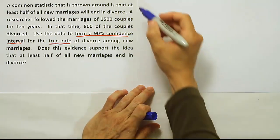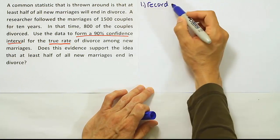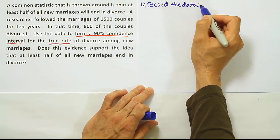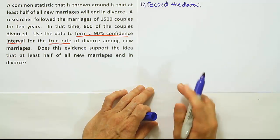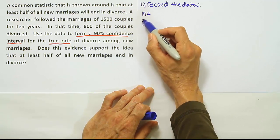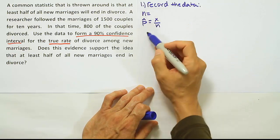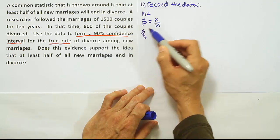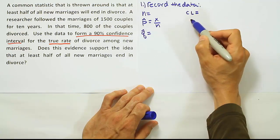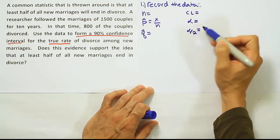First step is to record all the information. Recording the data from the problem, we always need an N. We're going to need a p-hat for this problem. P-hat is x over N. We will then need a q-hat. From there, we can get the confidence level, alpha, and alpha over two.